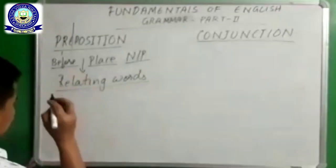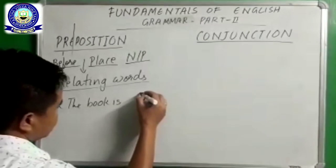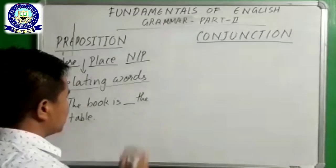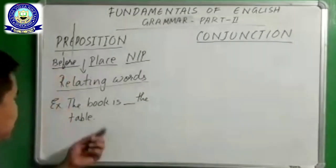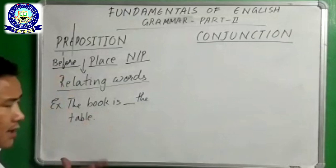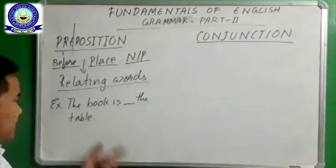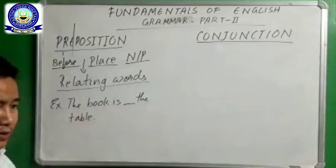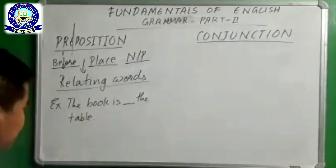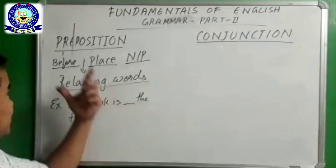For example, if you write 'The book is the table,' here we don't find the relation between book and table. How can we see that the book is the table? Because book and table are two different things — a book that we read, and a table that we use to write or in the kitchen. So what is missing here? That missing thing is preposition.